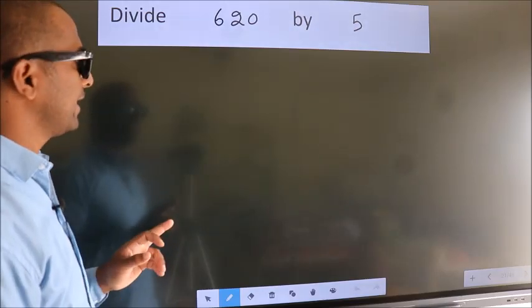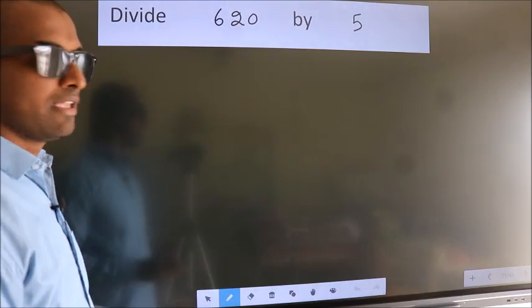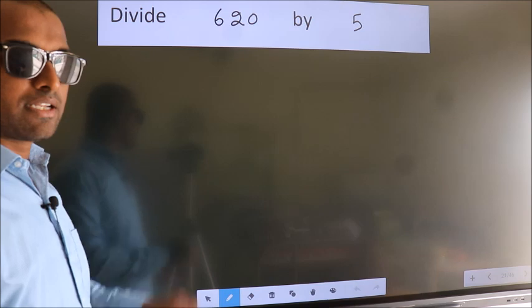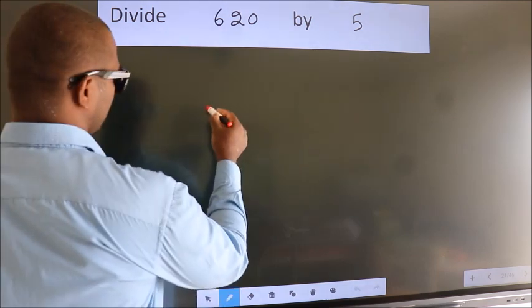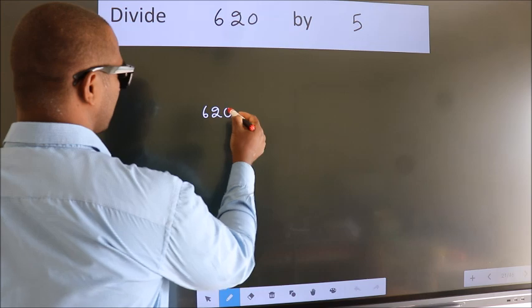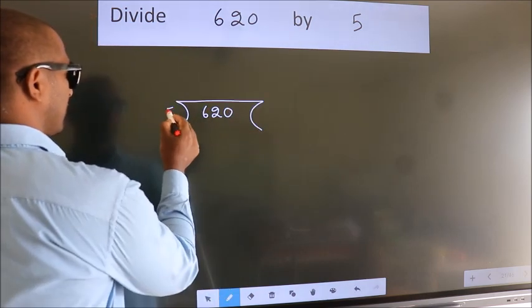Divide 620 by 5. To do this division, we should frame it in this way. 620 here, 5 here.